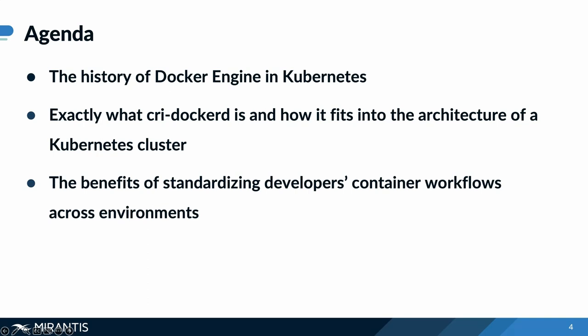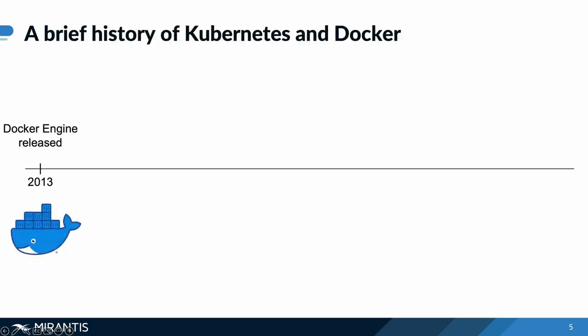If we look back a couple of years into the history of the popularization of containerization — in 2013, Docker Engine was released and Docker was formed. This really brought containerization into the mainstream and made it a lot simpler for folks to be able to work with containerization.